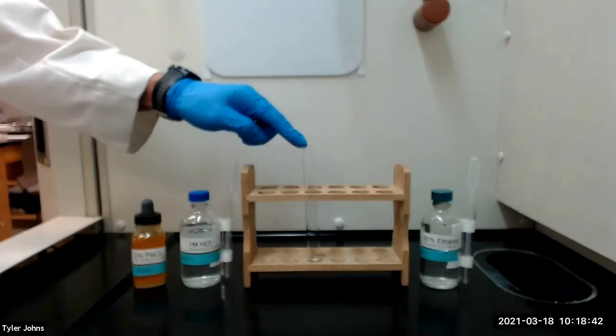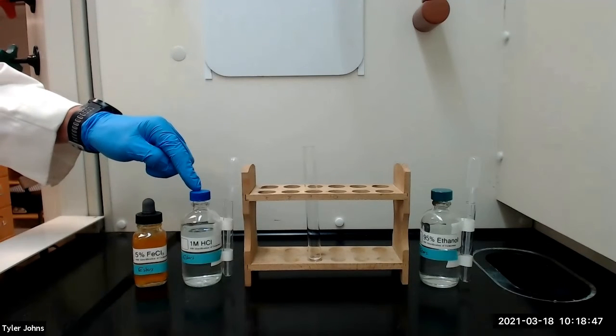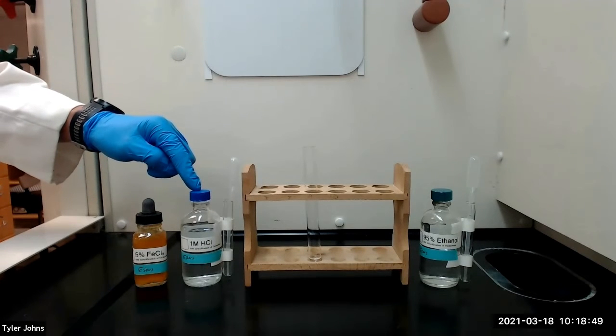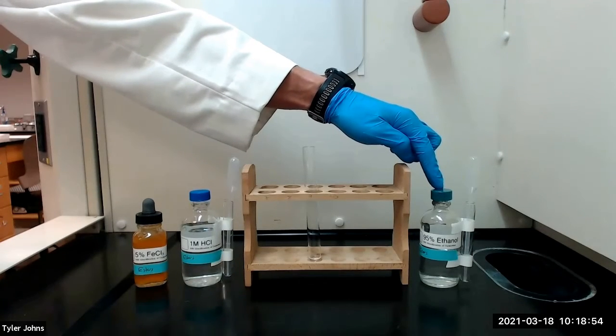After removing the solution from the heat and allowing it to cool, we will add two milliliters of one molar hydrochloric acid. If the solution becomes cloudy, we will need to add two milliliters of 95% ethanol to clarify it.